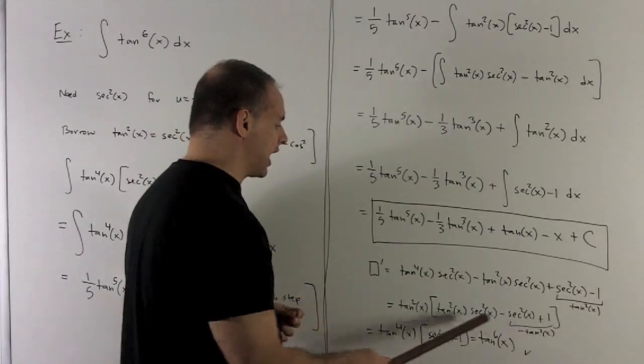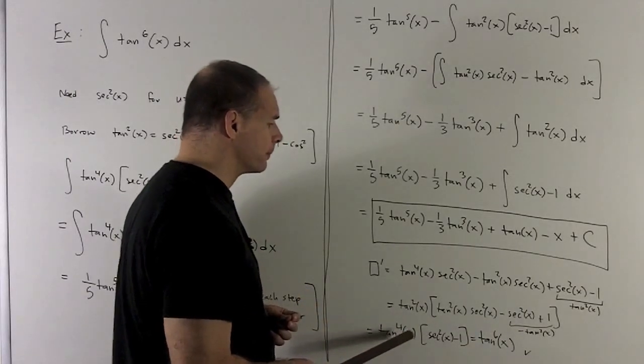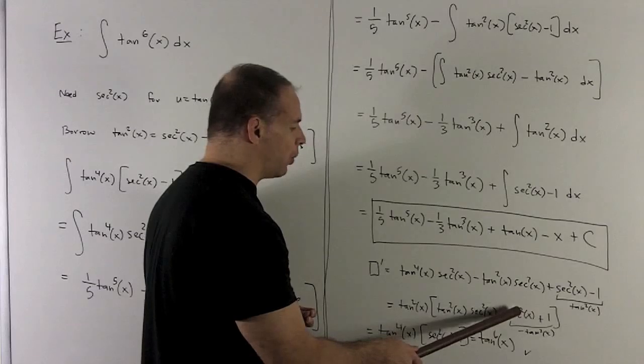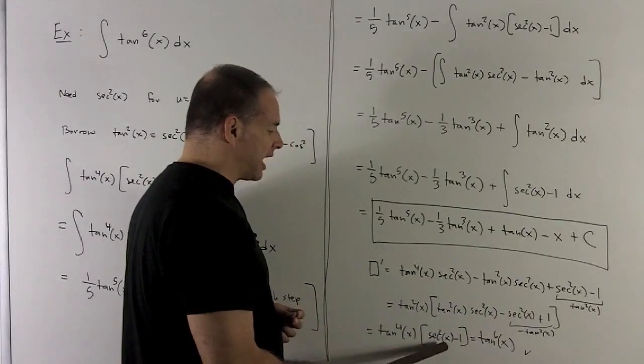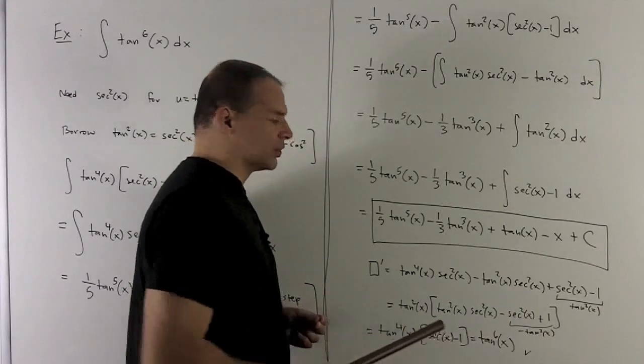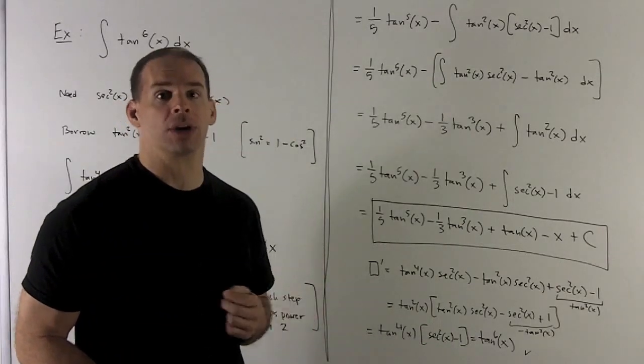I could factor another tan squared out, gives me tan to the 4th. I'm left over with a secant squared minus a 1. That's going to be tan squared, so this is going to drop down to tan to the 6th, and our check works.